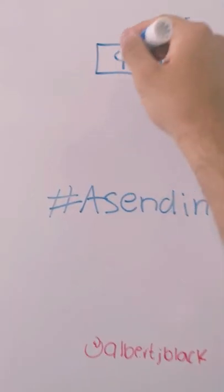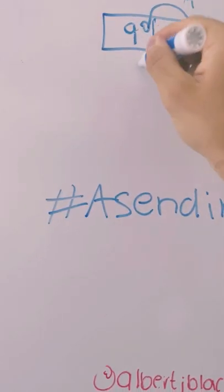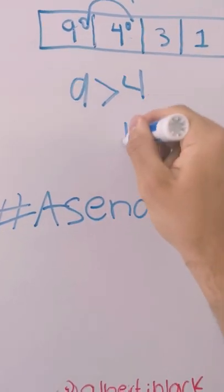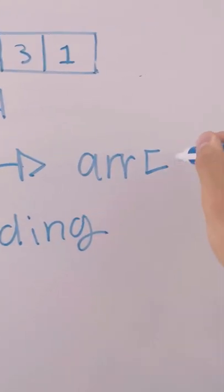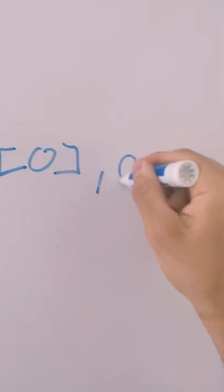For an ascending order bubble sort, we're going to check the first two values, then check if 9 is greater than 4. If so, we're going to swap the values at the index position of 9 and the index position of 4.